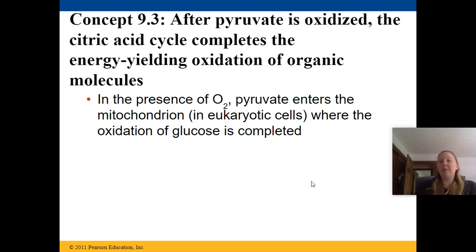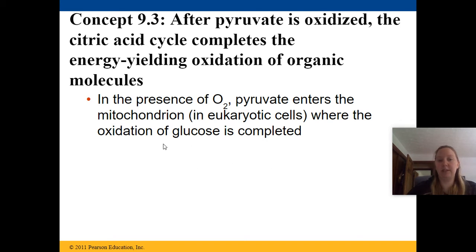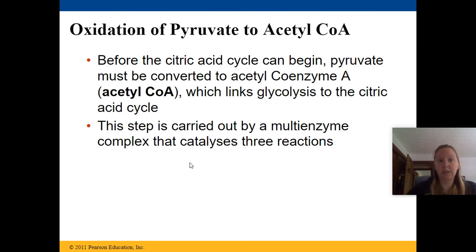After pyruvate gets oxidized, the citric acid cycle's job is to complete the energy-yielding oxidation of the organic molecules. In the presence of oxygen, pyruvate enters the mitochondria in eukaryotic cells where the oxidation of glucose gets completed.